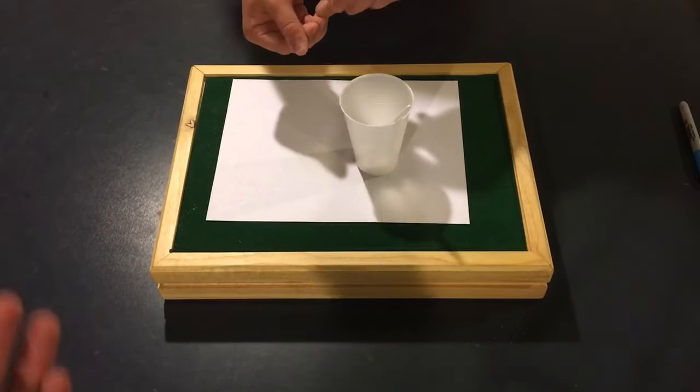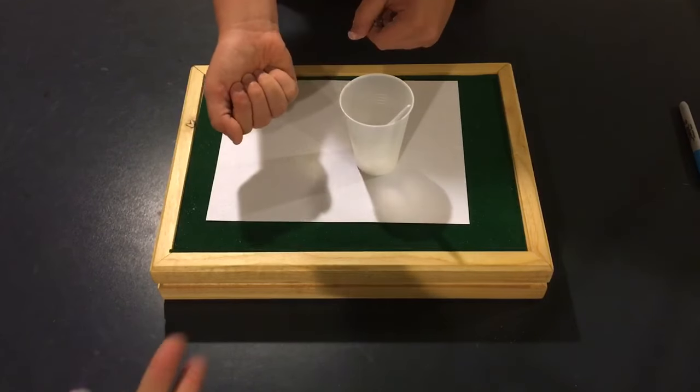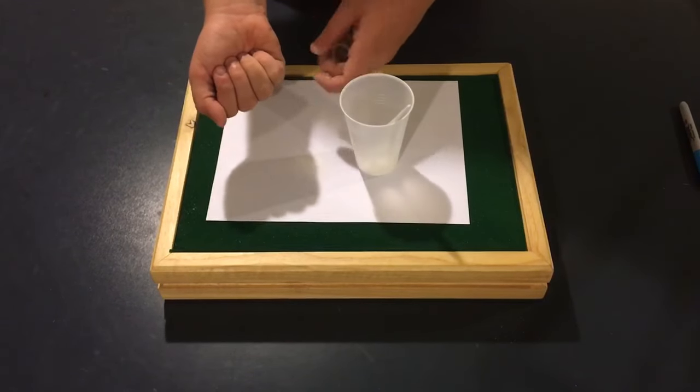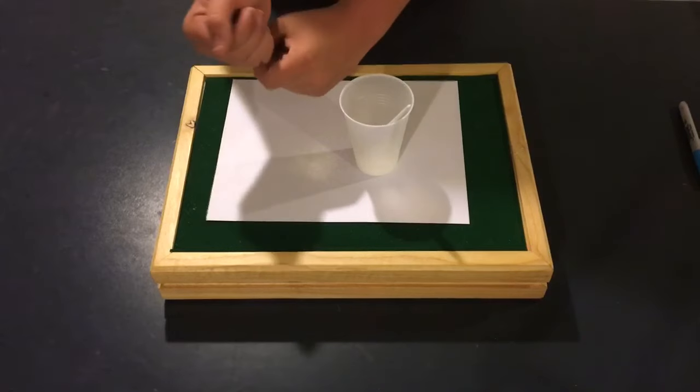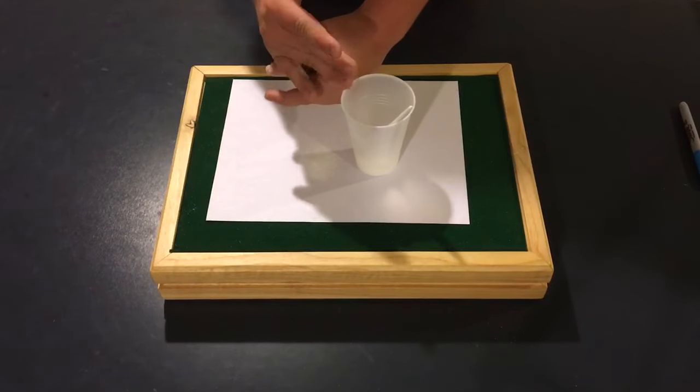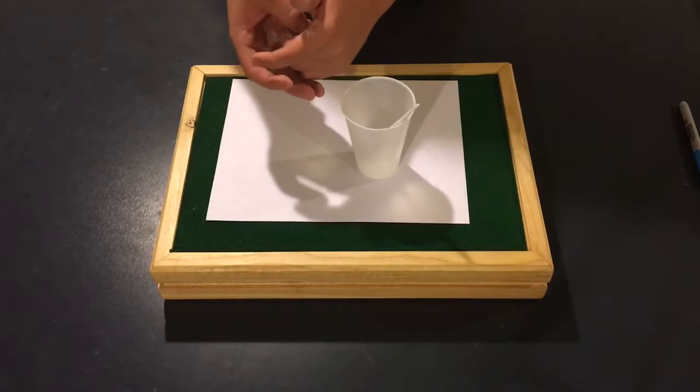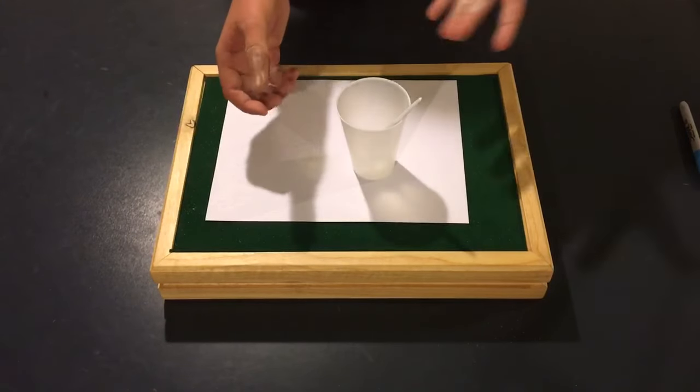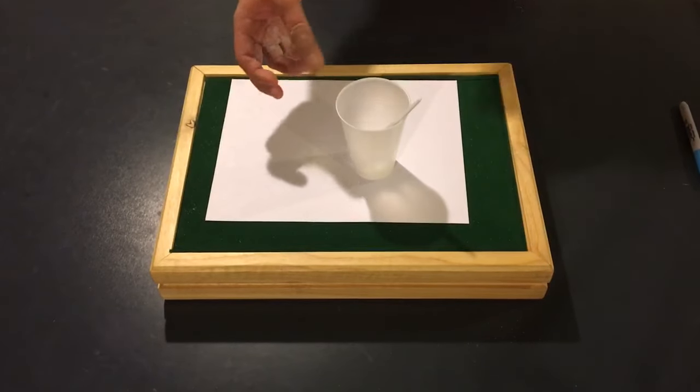He pulls it off again and pours it into his other hand. And he repeats this. What he does is he'll actually take the salt and pour it back into the thumb tip. And then from there, he'll push it in with his thumb again. He basically just repeats the same thing over and over again.